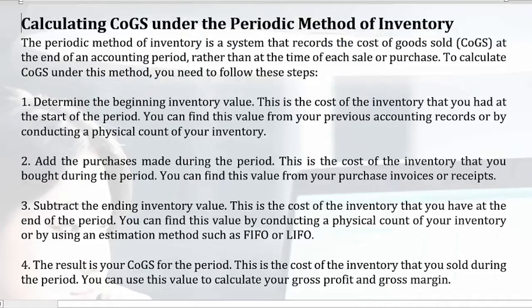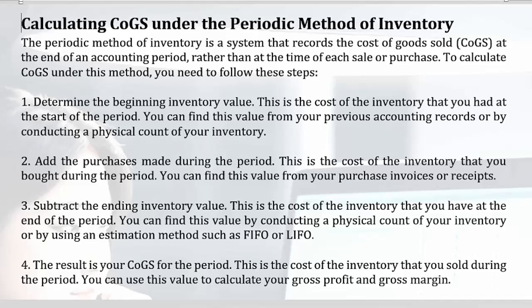Calculating COGS under the periodic method of inventory. The periodic method of inventory is a system that records the cost of goods sold (COGS) at the end of an accounting period, rather than at the time of each sale or purchase.